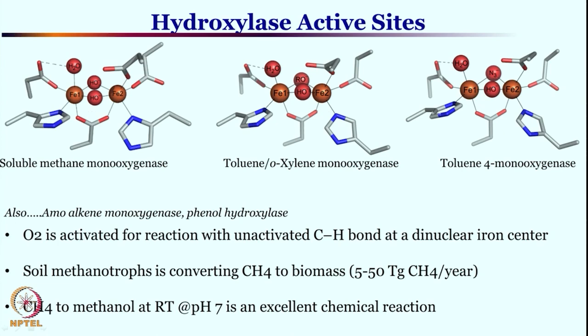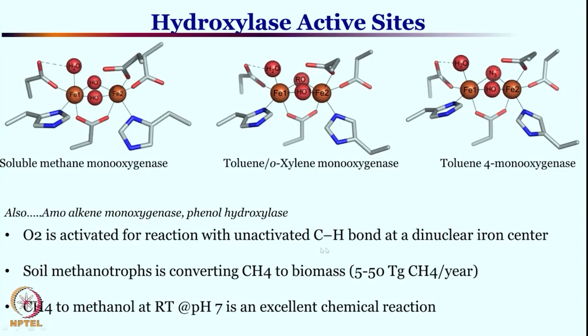These are the crystal structures of different monooxygenases, and very little difference exists among them. There are also alkene monooxygenases which can convert an olefin into an epoxide, and phenol hydroxylases which can convert phenol into catechol — but all of them have a diiron active site. In all these cases oxygen is activated and they are involved in very difficult transformations. For methane monooxygenase, oxygen activation is coupled with unactivated C-H bond activation and corresponding hydroxylation chemistry.